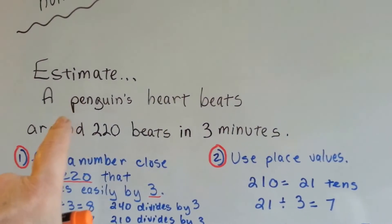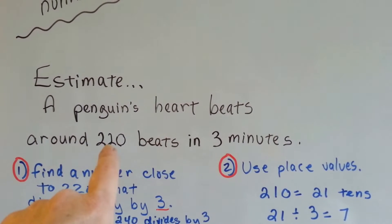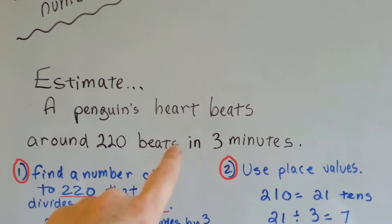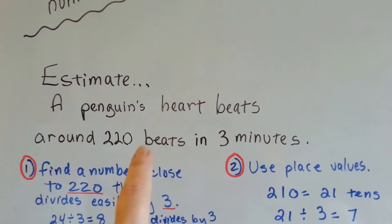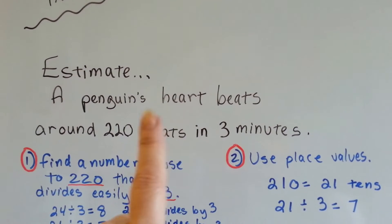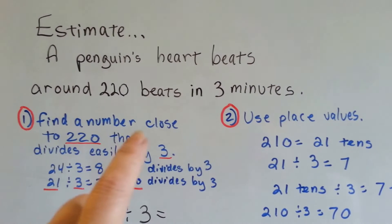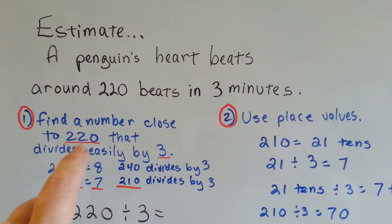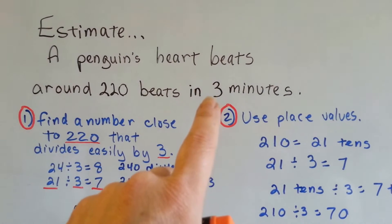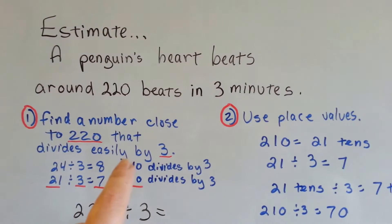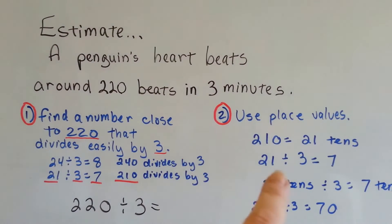Let's take a look at this. A penguin's heart beats around 220 beats in 3 minutes. If we wanted to find out how many times it beat in 1 minute, what we would do is find a number close to 220 that divides easily by 3. We're going to use place values to help us.